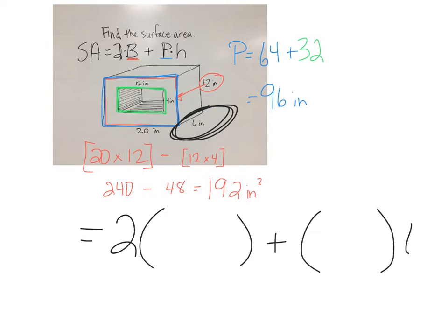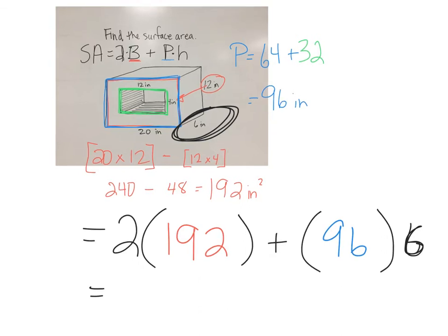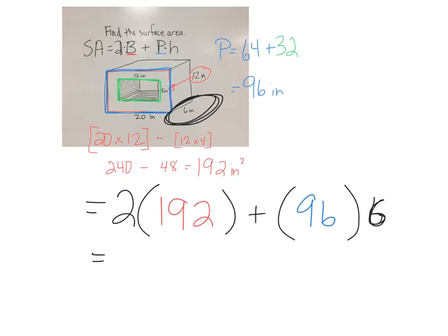We had a 192 base area and a 96 base perimeter. When I multiply and add all these things together, I get a total surface area of 960 square inches.